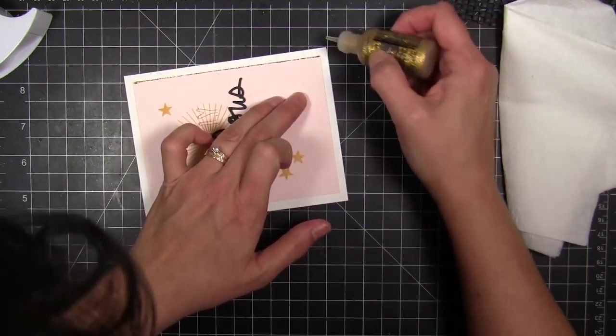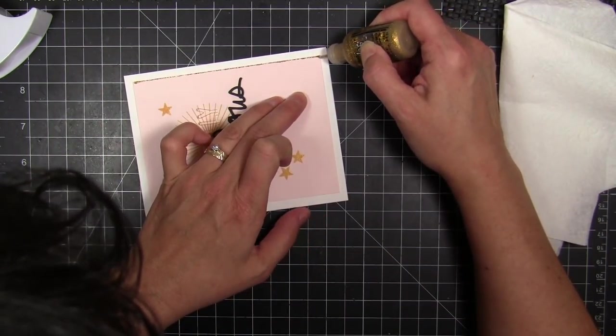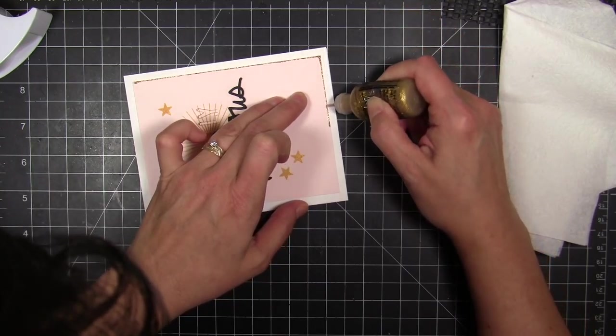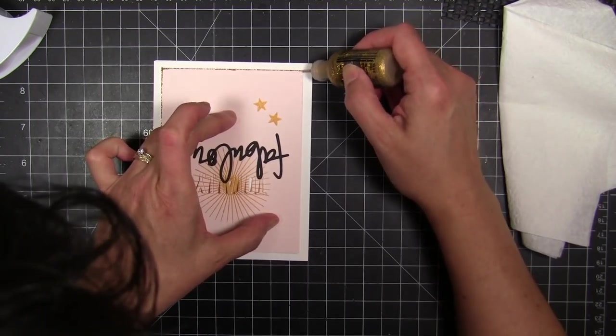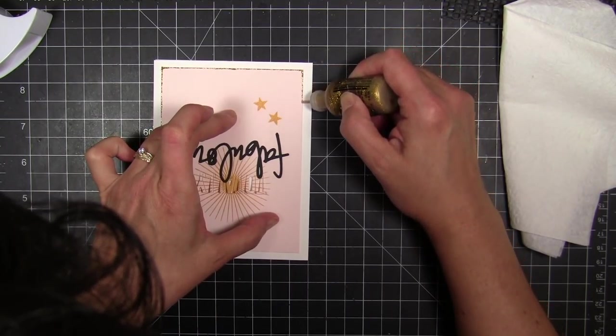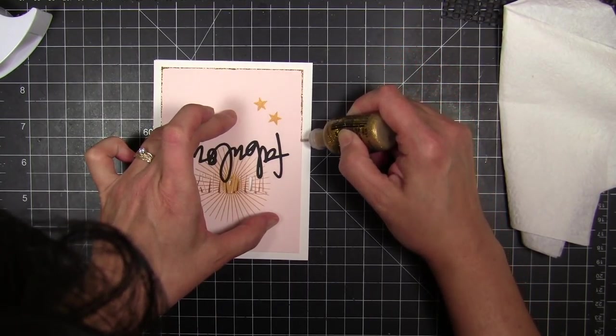And then I'm going to butt it up against the edge of that pale rose cardstock at a 45 degree angle and then maintain steady pressure as I squeeze the bottle and drag it down the edge. And it will give me a perfect fine bead of glitter glue along the edges.